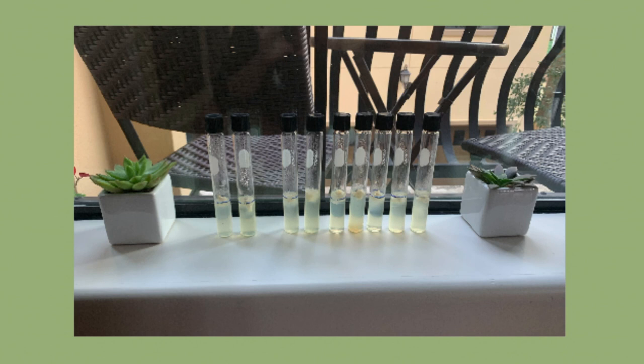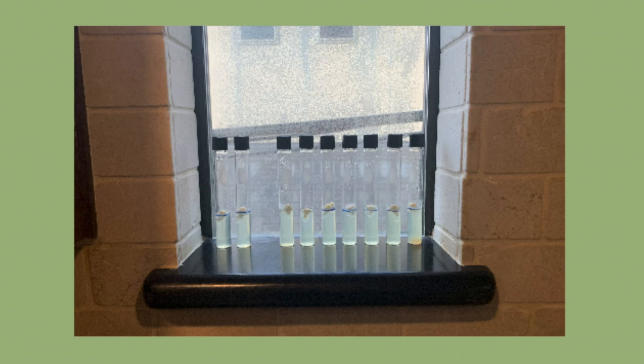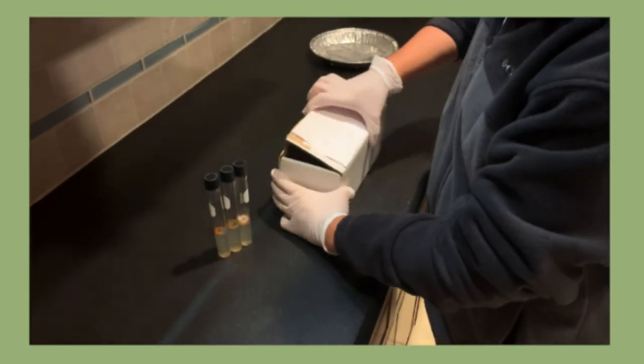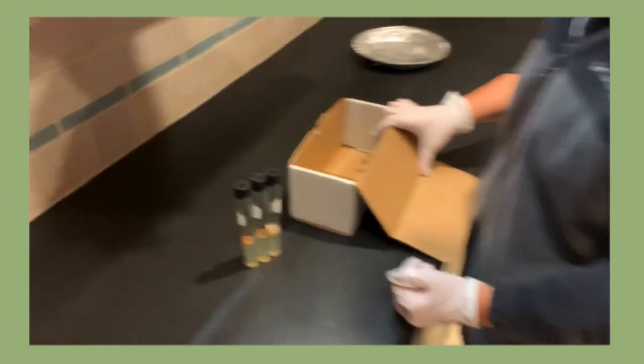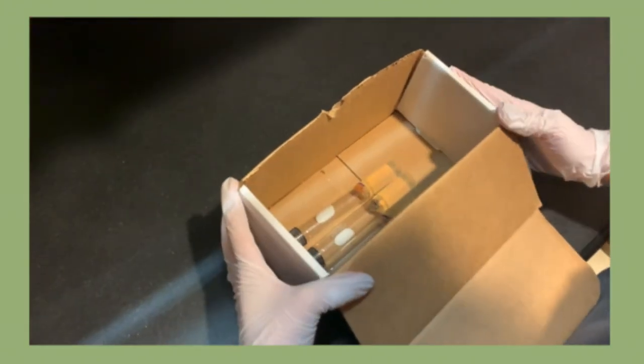Place the tubes on a windowsill, where they will receive indirect sunlight for most of the day. Root should appear within 6 weeks. Contamination for some of the plants is likely. If some of the plants become contaminated, as can be seen here, remove the test tube from the bunch and place into a cardboard box. Once sealed with tape, that box can be discarded into the trash.